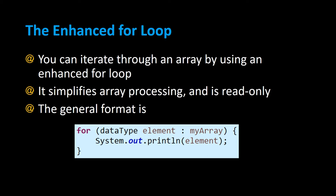The enhanced for loop is another type of looping structure that can be used for iterating through an array. It simplifies array processing and it's read only. The general format starts with the word 'for', then in parentheses you have the data type of the array, followed by an element name to reference each array element at each loop iteration, a colon, and then the name of the array. In the body of the loop, you can print it out.